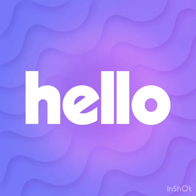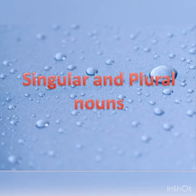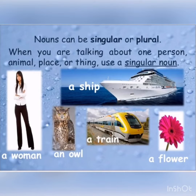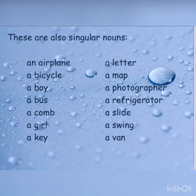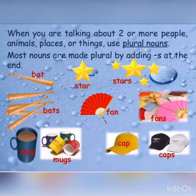Good afternoon students. Today we will talk about singular and plural nouns. Singular nouns refer to only one person, place, or thing. Examples of singular nouns include: airplane, bicycle, boy, and bus.